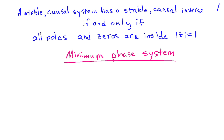Minimum phase in all-pass systems occur naturally in the study of difference equation descriptions for systems using the Z-transform. We know from our analysis of inverse systems that a stable causal system has a stable causal inverse if and only if all the poles and zeros of the system lie inside the unit circle. This is what we call a minimum phase system — a system that has all its poles and zeros inside the unit circle.